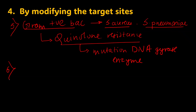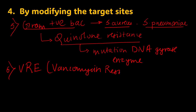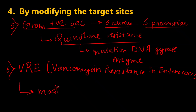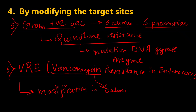The last example is VRE — vancomycin-resistant Enterococci. Enterococci develop resistance against vancomycin through modification of the vancomycin target site. The target site of vancomycin is the D-alanine D-alanine side chain of peptidoglycan, and modification in this target site leads to vancomycin resistance.